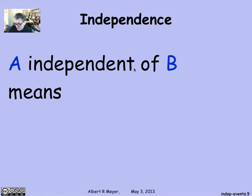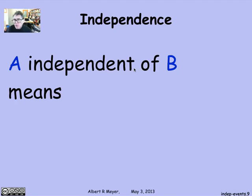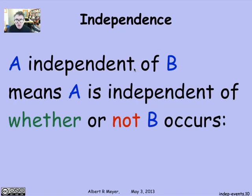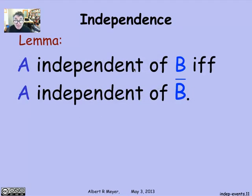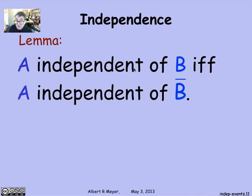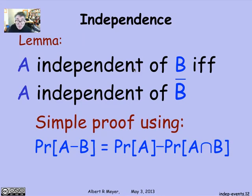The intuitive idea that A and B have nothing to do with each other is that A is independent of B means that A is independent of whether or not B occurs. That is to say, if A is independent of B, it ought to be independent of the complement of B. And that's a lemma that's also easily proved: A is independent of B if and only if A is independent of the complement of B. It's a simple proof using the difference rule. And again, I encourage you to stop with a piece of paper and pencil and convince yourself that that follows with a one-line proof.